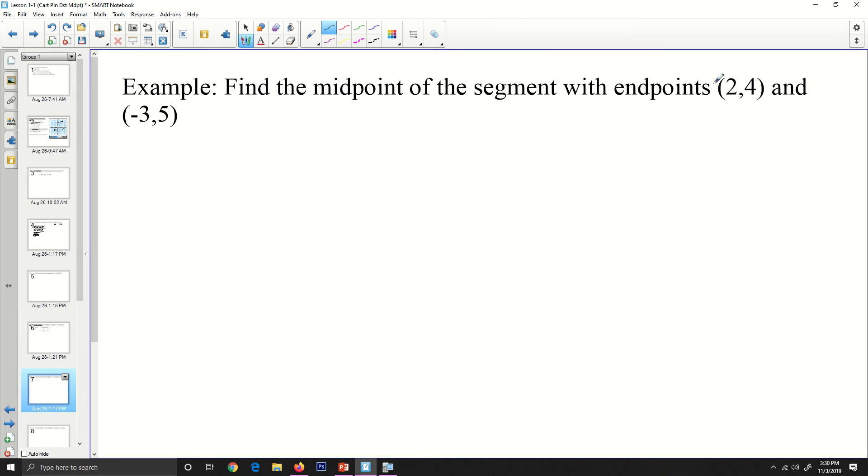Find the midpoint of a segment with endpoints 2, 4, and negative 3, 5. So my midpoint m is going to, if we recall, it's going to be x1 plus x2 divided by 2, comma, y1 plus y2 divided by 2.